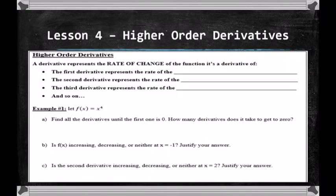A higher order derivative just refers to anything more than the first derivative — for example, the second derivative, the third derivative, the fourth derivative. We already went over how to find higher order derivatives in lesson 2. But today, we're going to talk about what these higher order derivatives are for, what they're useful for, and what their applications are.